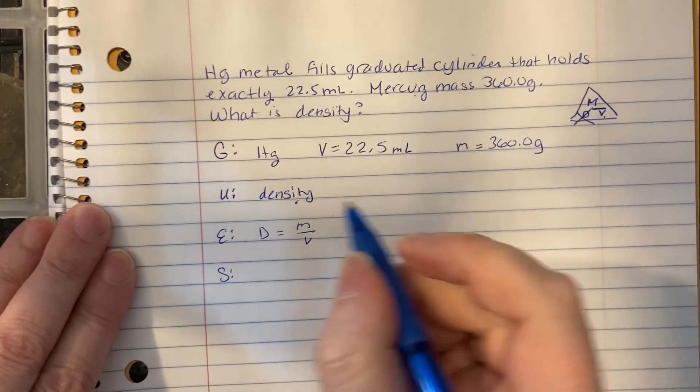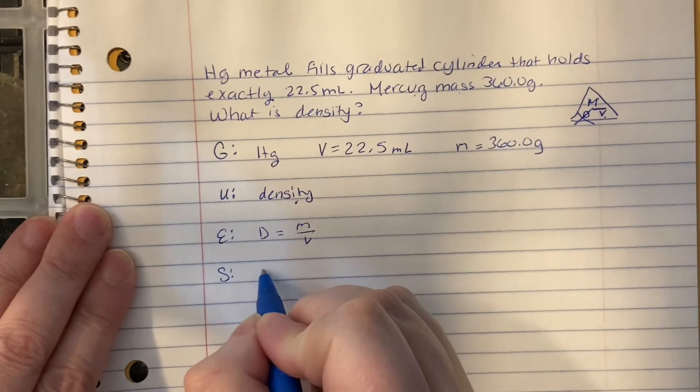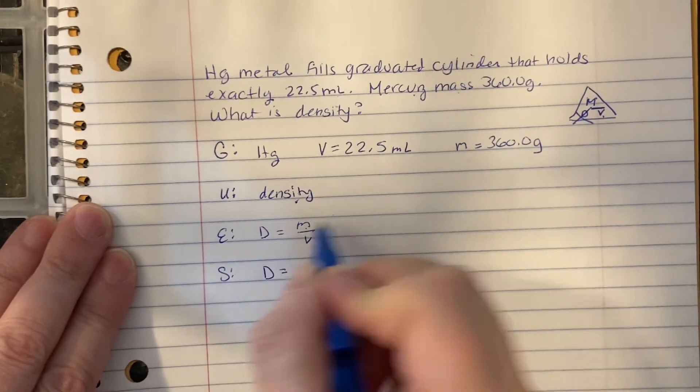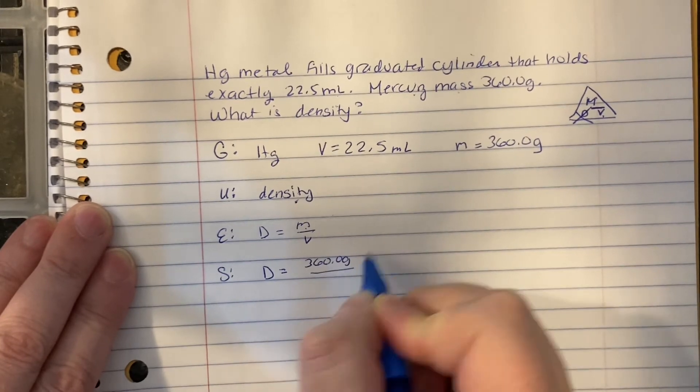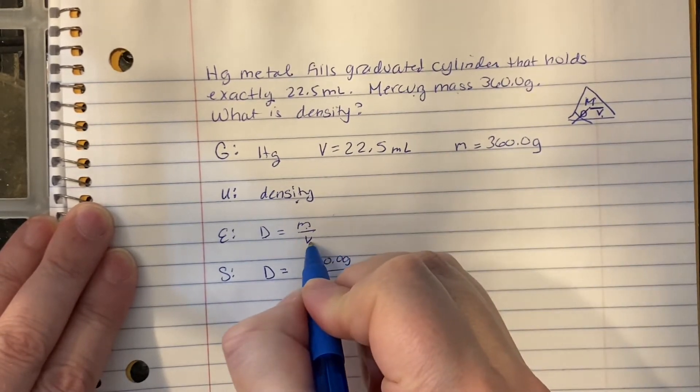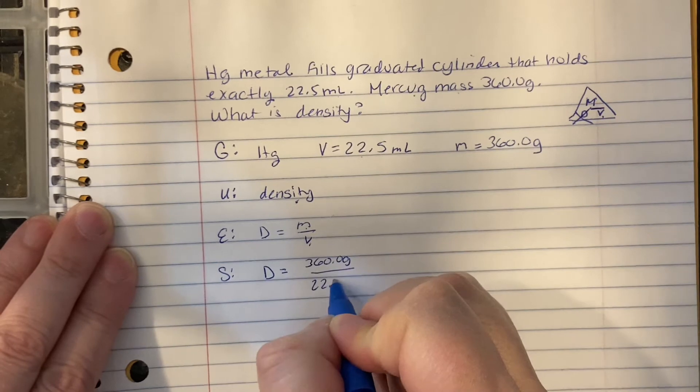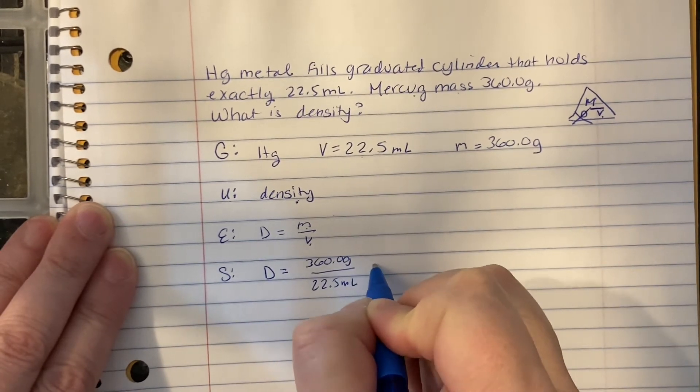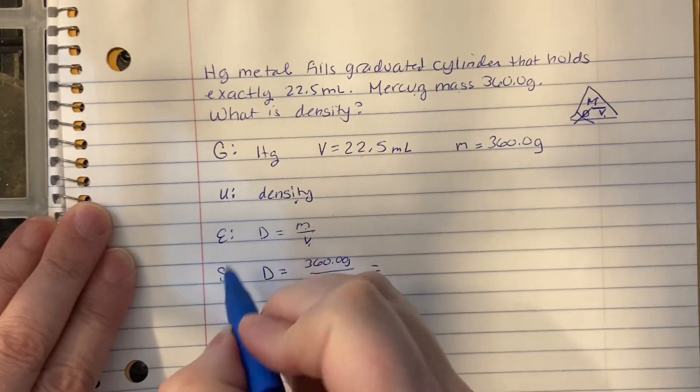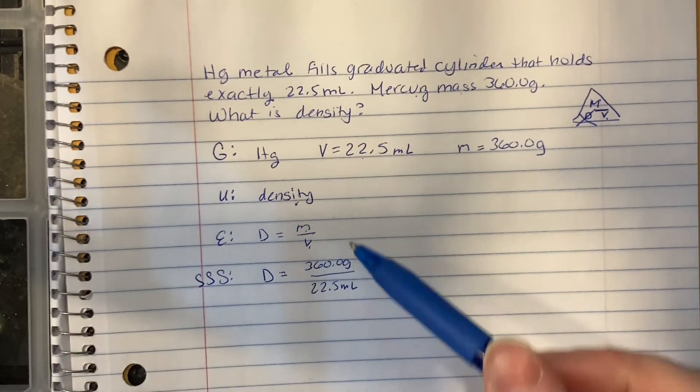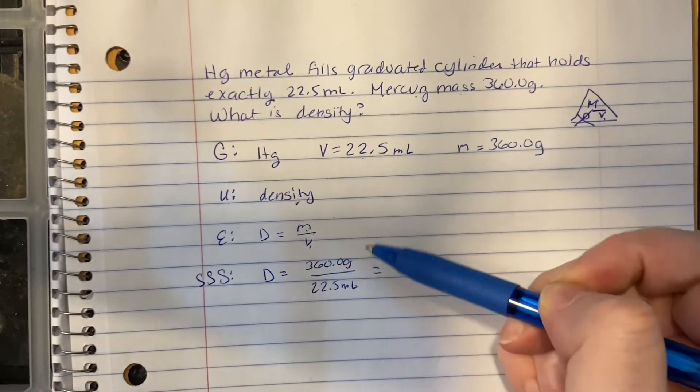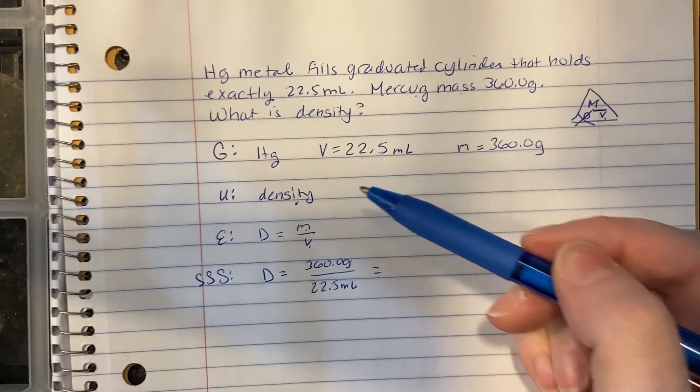S is for substitute. Density we don't know, so it stays a D. Mass is 360.0 grams. Volume goes in there for the V, 22.5 milliliters. And so I'm actually going to put all three S's right here on one row, so you don't have to rewrite it. We have it substituted in, and then the second S is for solve.